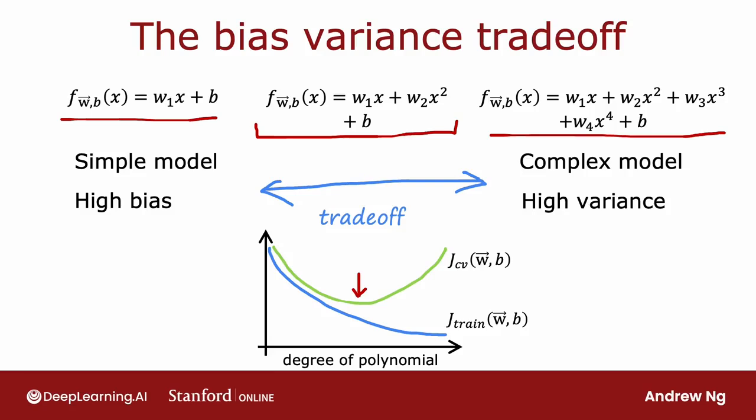Before the days of neural networks, machine learning engineers talked a lot about this bias-variance trade-off in which you had to balance the complexity, the degree of polynomial or the regularization parameter lambda to make bias and variance both not be too high. And if you hear machine learning engineers talk about the bias-variance trade-off, this is what they're referring to.